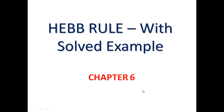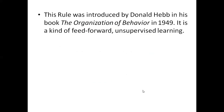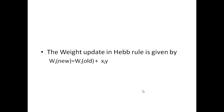Today we are going to discuss Hebb's rule and we will also take an example of an AND gate to implement this and solve specific problems. Hebb's rule was basically introduced by Donald Hebb, who wrote a book called 'The Organization of Behavior' in 1949. He explained that it is a kind of feedforward or unsupervised learning. What happens in Hebb's rule is it adjusts the weights, and through adjusting the weights it allows the network to learn new rules.